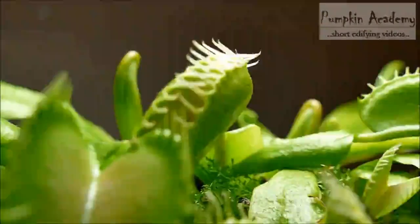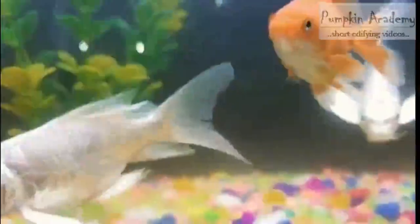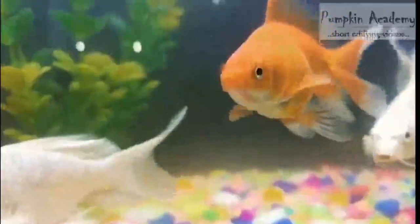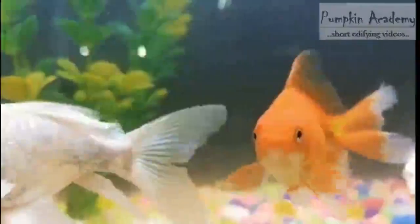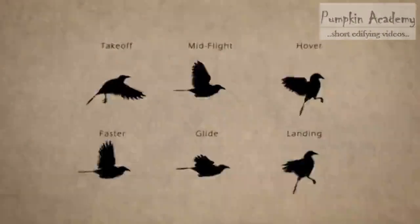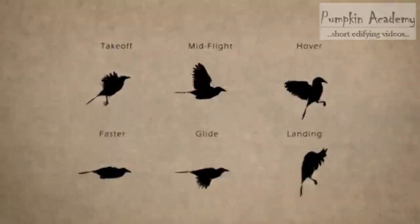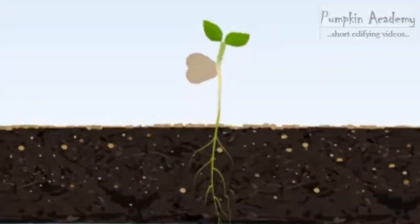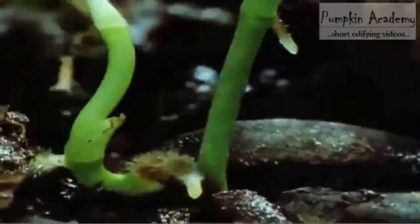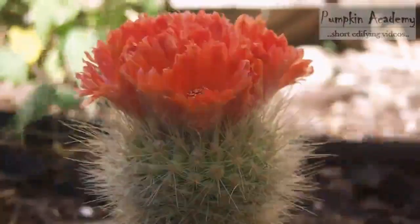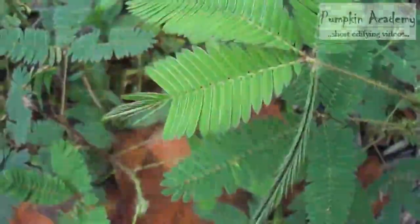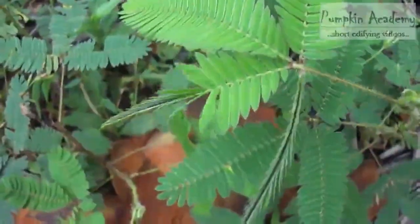Movement is one of the basic features of organisms. Organisms adopt various mechanisms for their locomotion. Movement is biologically different from locomotion. In movement, organs move with no change in whole body position. But in locomotion, the whole body moves from place to place.